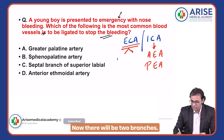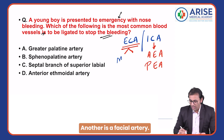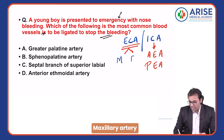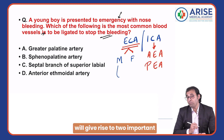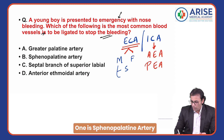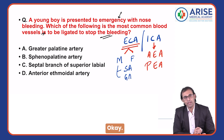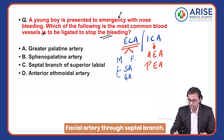There are two branches from the external carotid artery: one is the maxillary artery and another is the facial artery. The maxillary artery gives rise to two important branches here — one is the sphenopalatine artery and the greater palatine artery. The facial artery contributes through its septal branch.